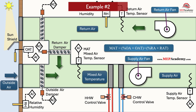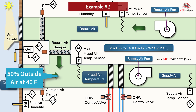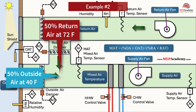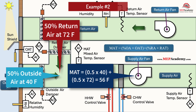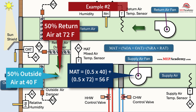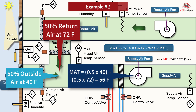Example 2 — 50% outside air: Outside air = 40°F, return air = 72°F, outside air = 50%, return air = 50% of total air volume. Mixed air temperature = (0.5 × 40) + (0.5 × 72) = 20 + 36 = 56°F. The coil sees 56°F mixed air temperature.